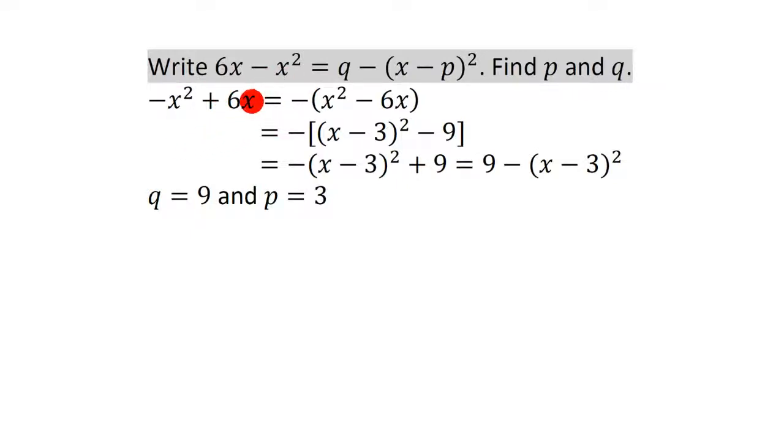And what you do when you've got a situation like this, where you've got something in front of the x squared, is you factorise it, so you don't have something in front of the x squared. So that something is a minus in this case, so I'm going to put the minus there, and then factorise it, so we get x squared minus 6x.